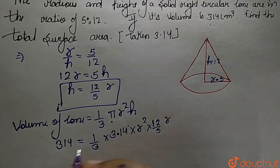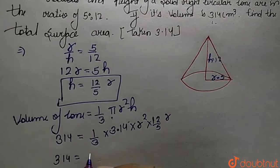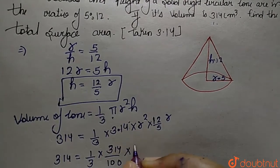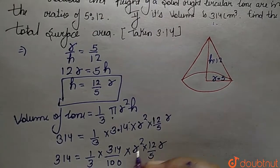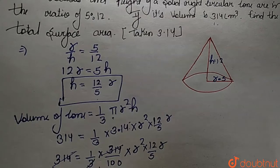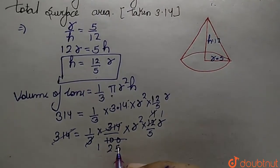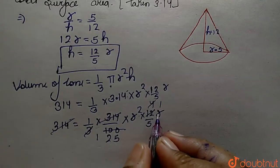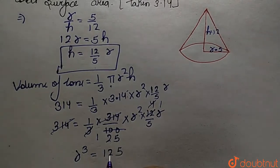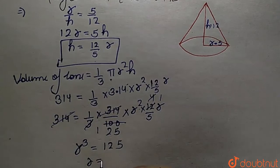Simplifying: 314 equals 1 by 3 of 314 over 100, multiplied with r squared, multiplied with 12 upon 5 of r. The 314s cancel, and simplifying further gives r cubed equals 125, so r equals 5 centimeters.